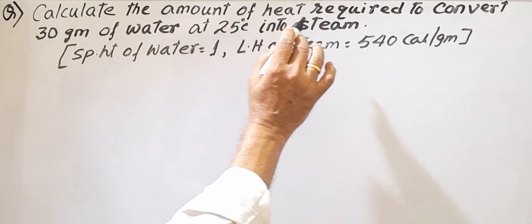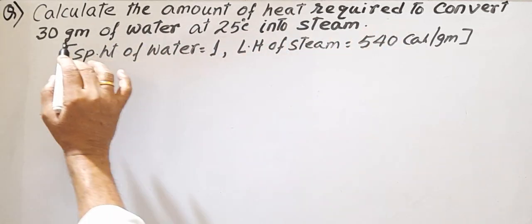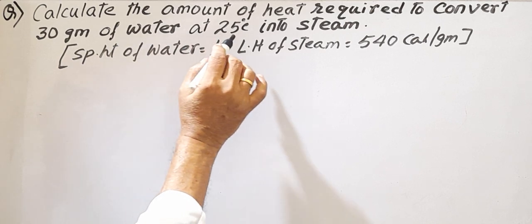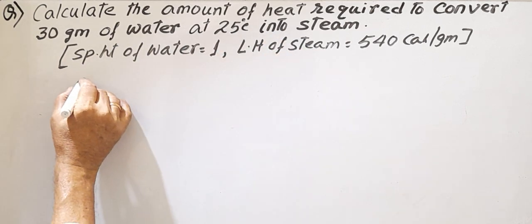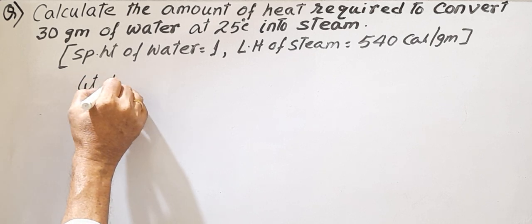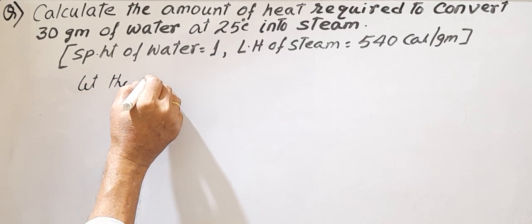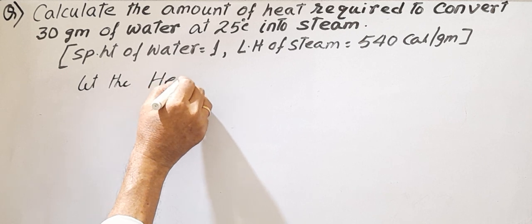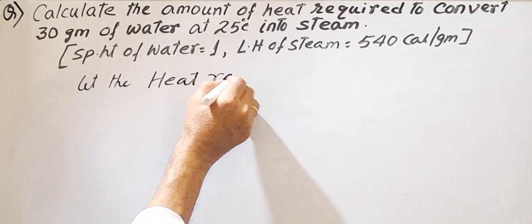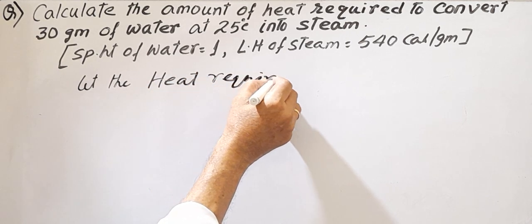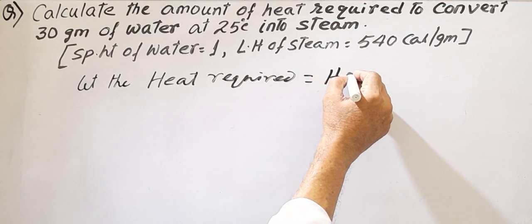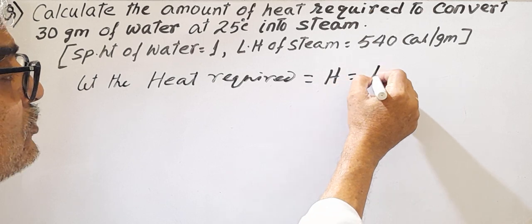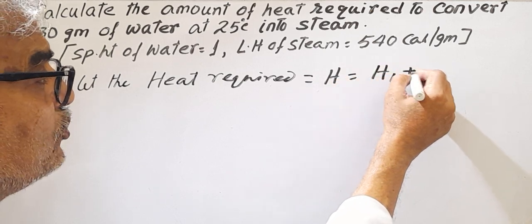First, calculate the amount of heat required to convert 30 grams of water at 25 degree centigrade into steam. So let the heat required equal to H, equal to H1 plus H2.